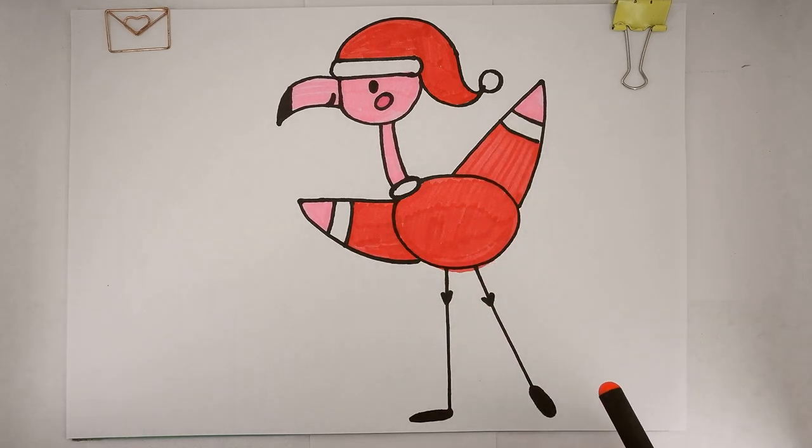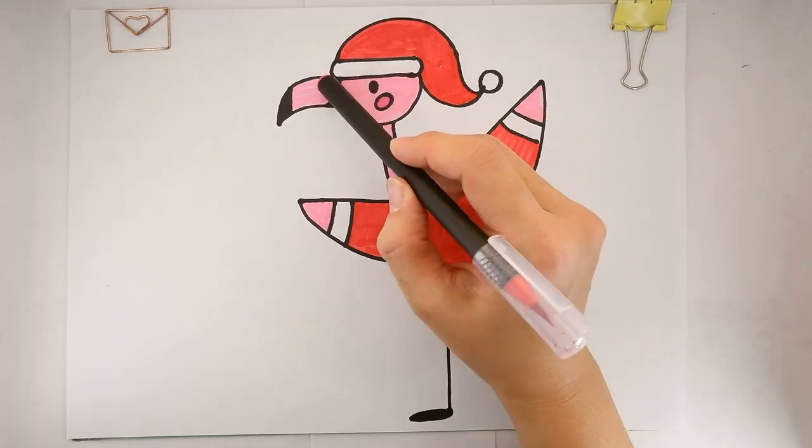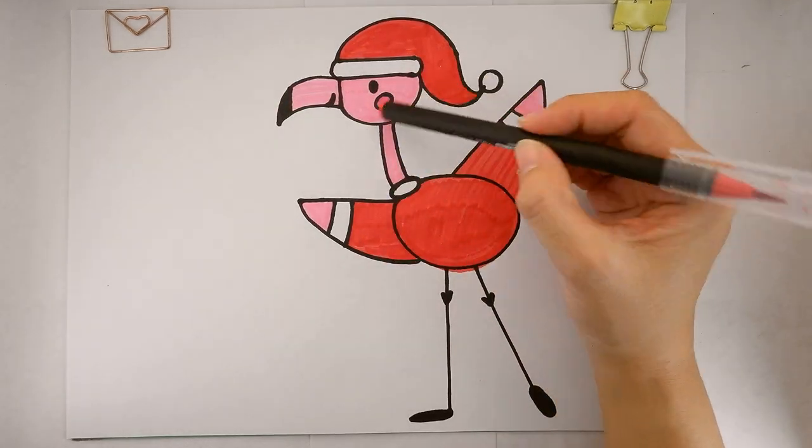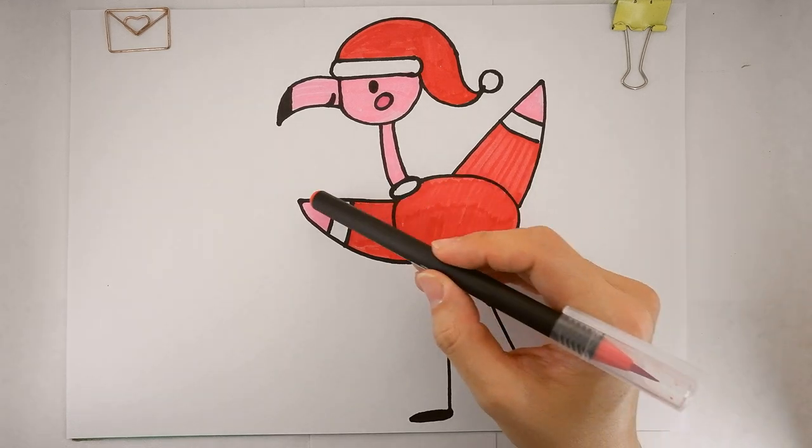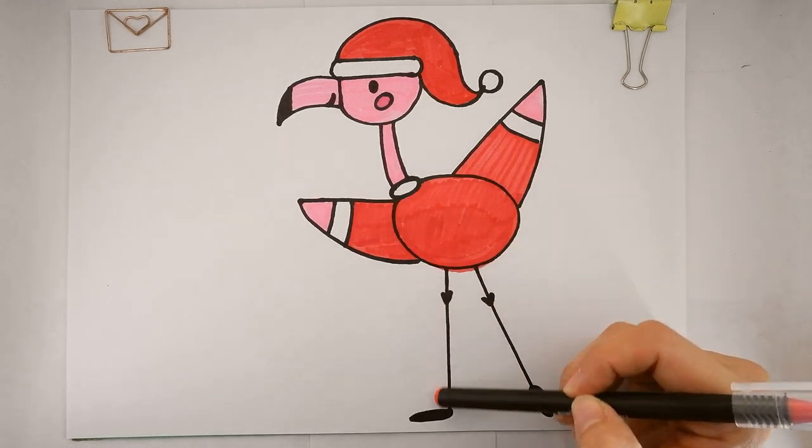Let's look at the picture one more time. Hat, beak, head, neck, body, wings, and legs.